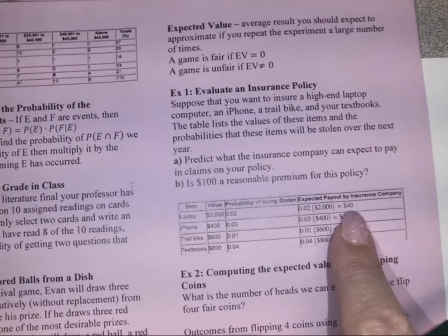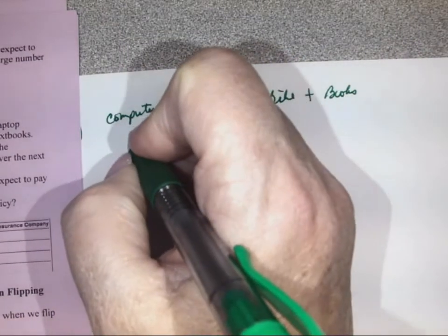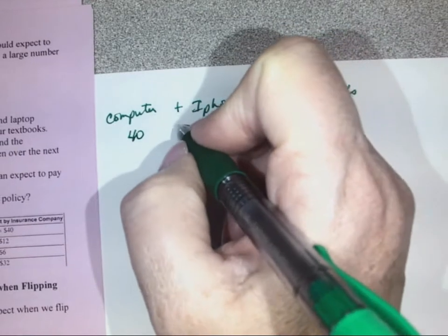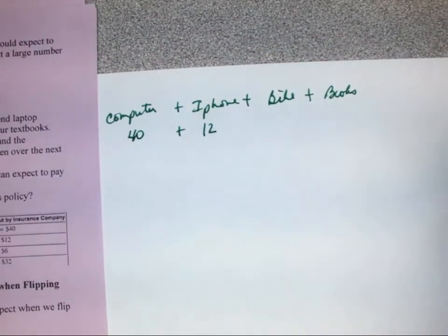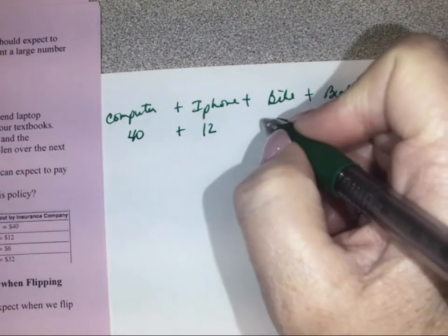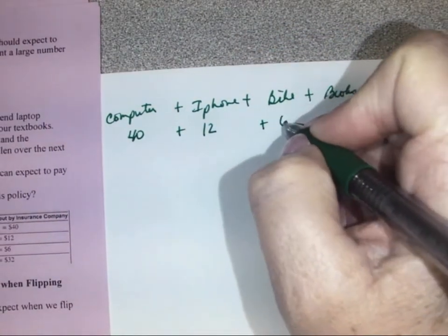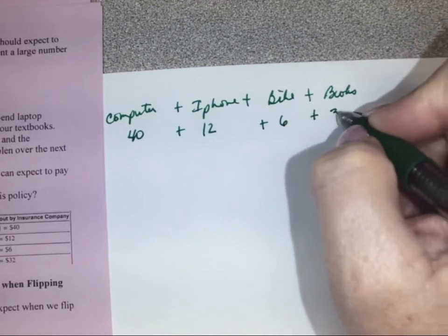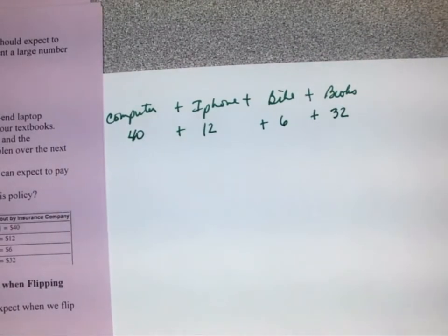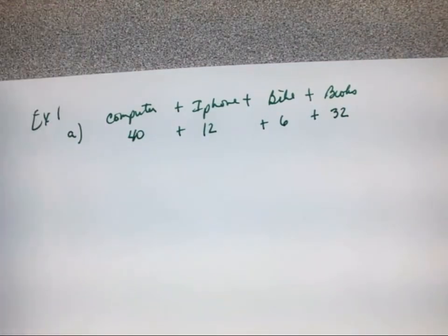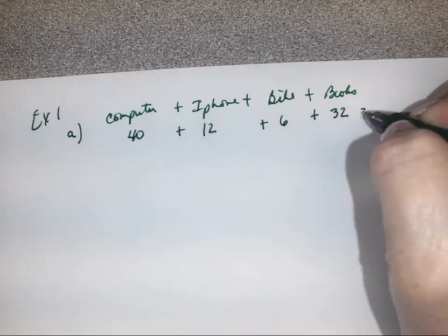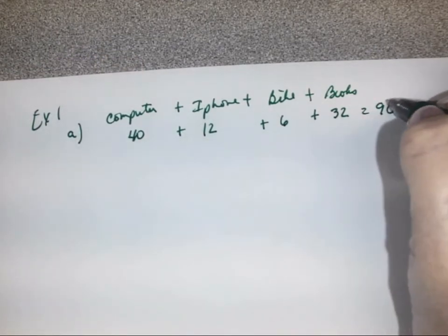The expected payout is $40 for the computer, $12 for the iPhone, $6 for the bike, and $32 for the textbooks. If we total those all up, it'll be $90.